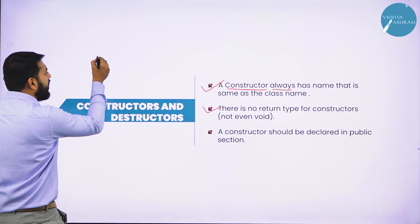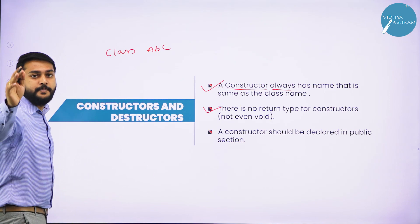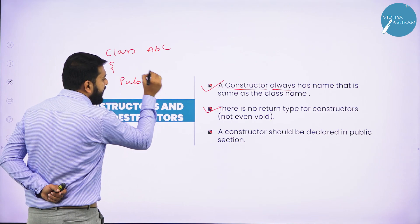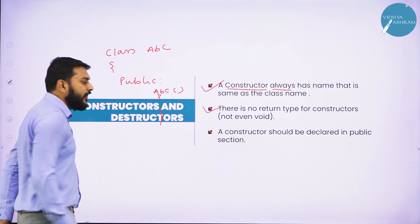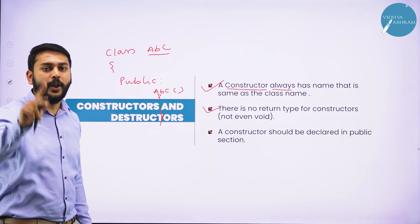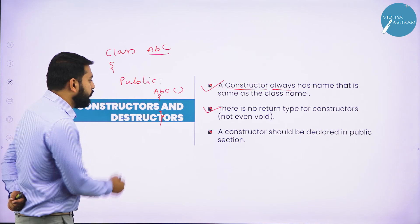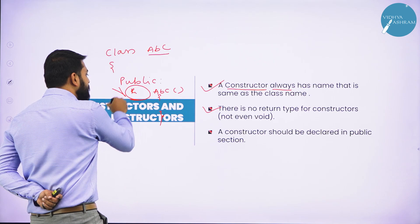For example, imagine I have a class ABC. My class name is ABC, and inside this class I have a public access specifier. My function name — according to the first point — should also be ABC. Why? Because only when the function name and the class name are the same will I treat this function as a constructor. Whenever we write other functions, we write a return type like int, void, or double — but for a constructor, we do not write any return type.